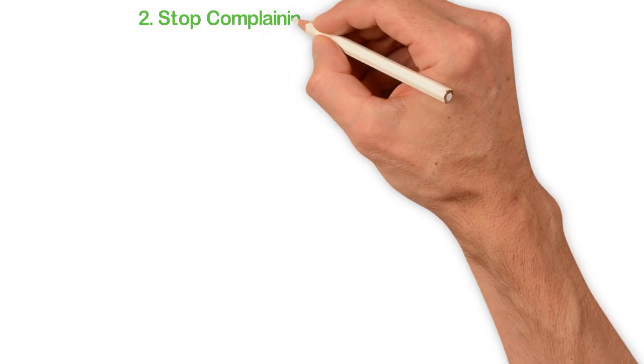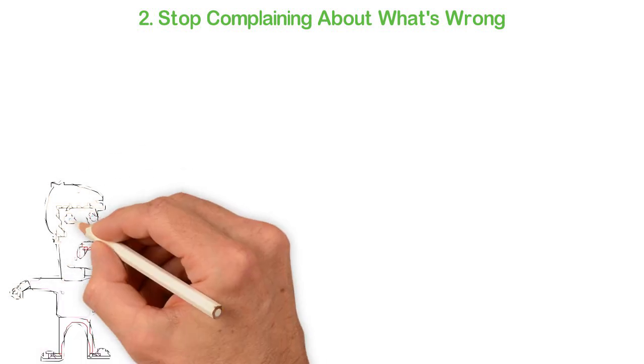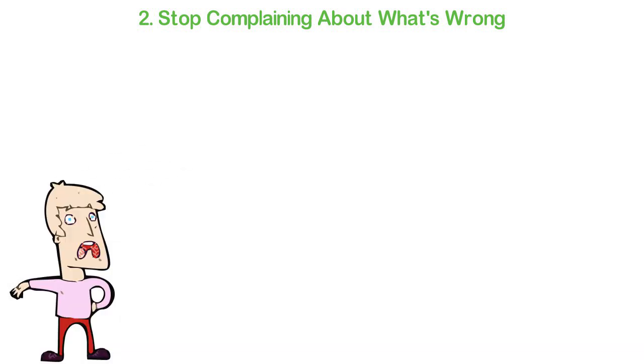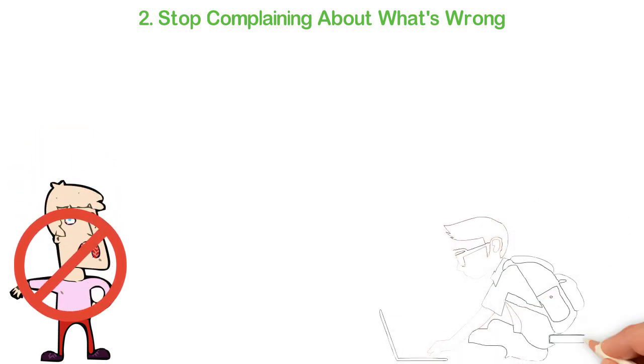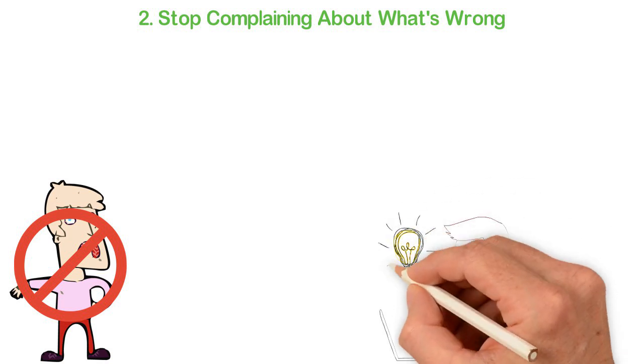2. Stop complaining about what's wrong. People who complain about everything don't care about anything. Stop complaining about things that are wrong in your country. Figure out a little part of the problem you can solve with your life and get busy trying to solve that. Complaints are for the weak-minded. Be strong.